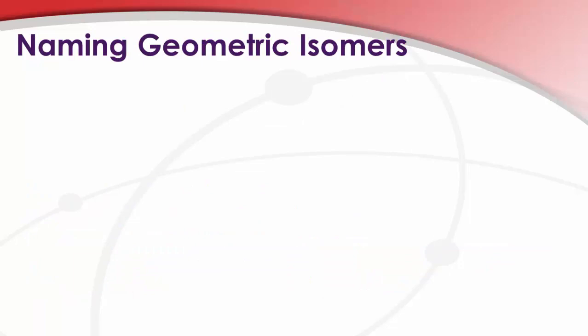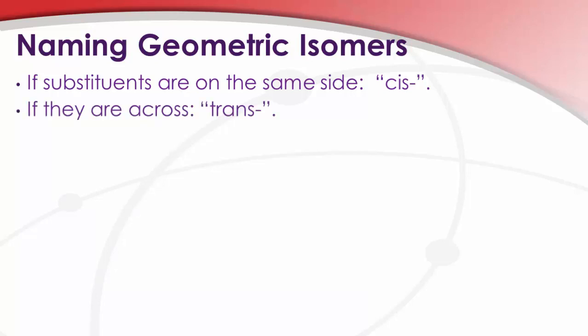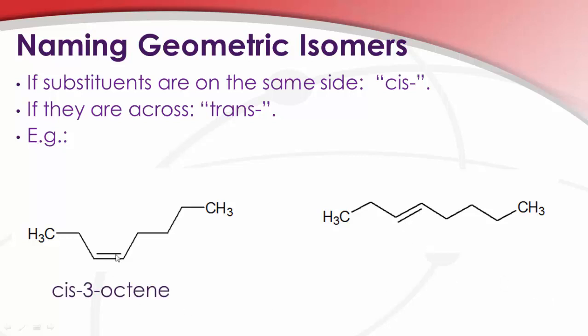So the second part of that question then is how do we name them? Well, it's pretty simple. They're both 3-octene. All we have to do is communicate whether the substituents of interest are on the same side, in which case we give it the prefix cis, or if they're across from each other, in which case we give it the prefix trans. So in this case, they're on the same side of the molecule, therefore it's cis. In this case, they're on the opposite side of the molecule and it's trans. So cis-3-octene, trans-3-octene.